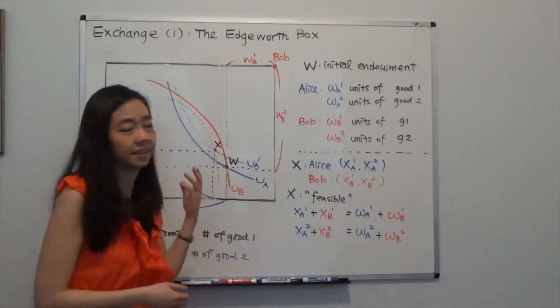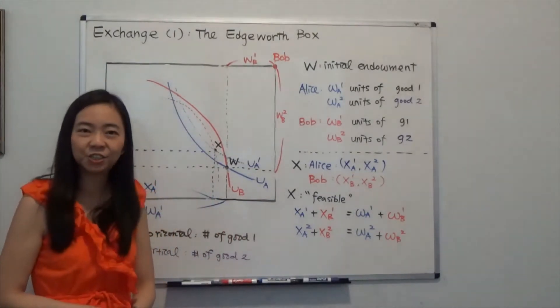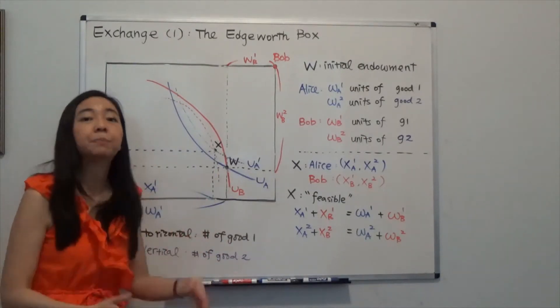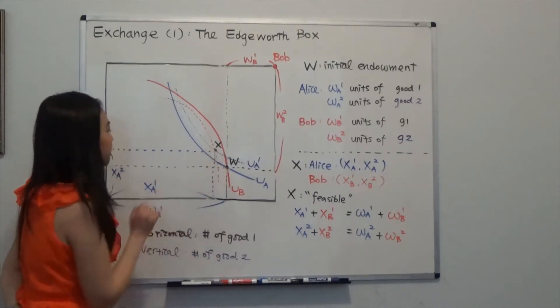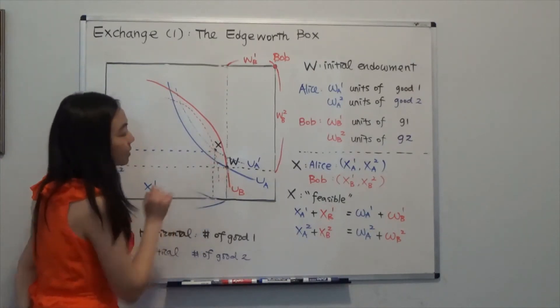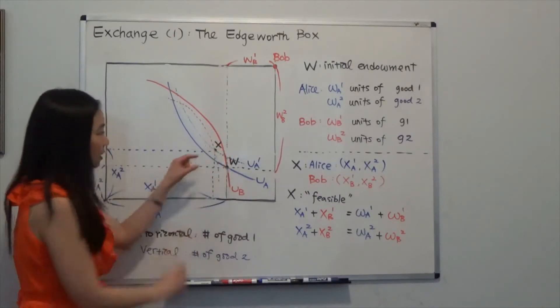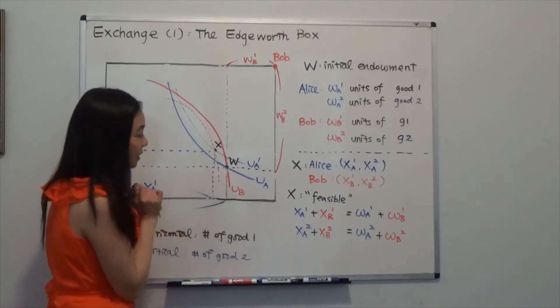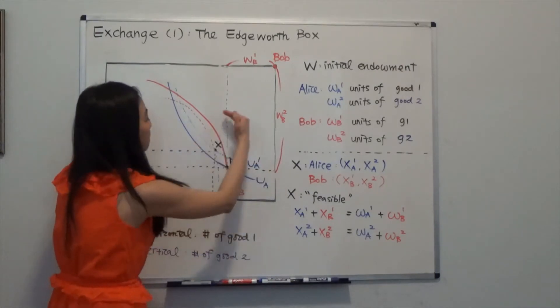You'll be asking, can both Alice and Bob do better or improve their utility level by exchanging? And the answer is yes. In fact, both Alice and Bob's utility can be improved by moving from point W, that's the endowment, to point X. So when we're moving from W to X, that means Alice is giving up some of her Good 1 in exchange for Good 2. So by doing so, you can see Alice's utility level is moving from UA to UA prime. So Alice is doing better.